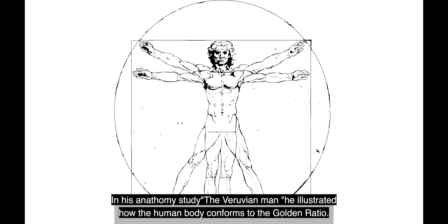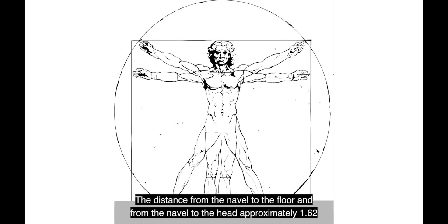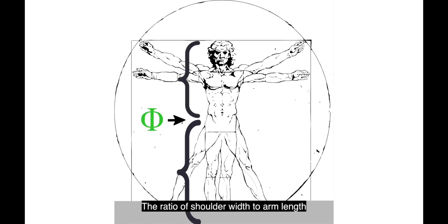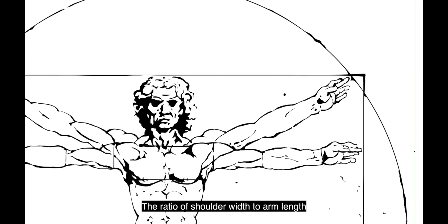In his anatomy study, the Vitruvian Man, he illustrated how the human body conforms to the golden ratio. The distance from the navel to the floor and from the navel to the head is approximately 1.62.